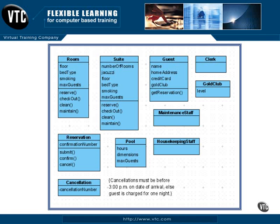Here's a quick example. In talking to personnel about a hotel and how it works, you can start to identify the different classes that make up the hotel system. One of your basic classes is the room, and that has attributes such as floor, the type of bed (king, queen, or double), smoking or non-smoking, and maximum number of guests allowed. Operations include reserve, checkout, clean, maintain, and so on.